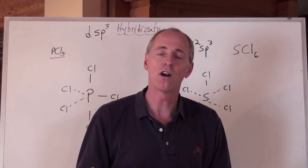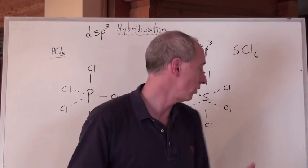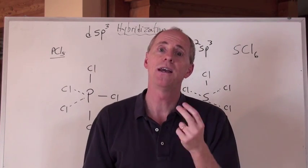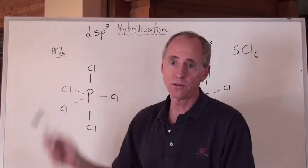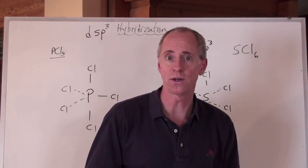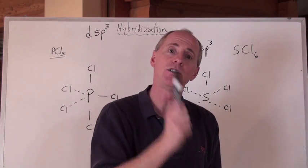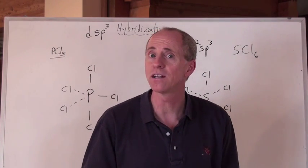So, there are all of your hybrid orbitals for the main shapes, sp3, sp2, sp, dsp3, and d2sp3, that all go along with, respectively, 4, 3, 2, 5, and 6 effective pairs.